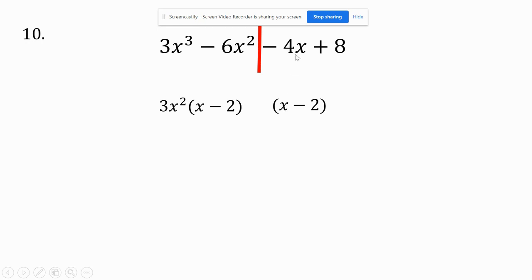What would I take times x to get negative 4x? It'd be negative 4. And negative 4 times x is negative 4x. And negative 4 times negative 2 is positive 8. So then I'm going to rewrite this. Now the x minus 2 is going to be one parentheses. The other parentheses will be what's left. The 3x squared minus 4. Because technically, it's like a huge distributed property.